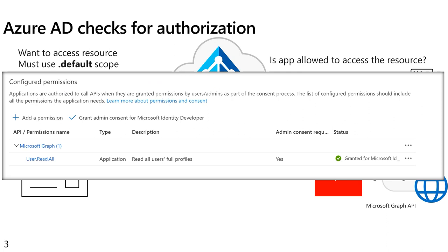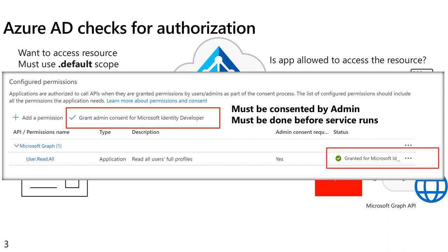And we look to see what permissions are in the application registration. So here, for example, the application has asked for user.read.all as part of its application registration. And we can see that the admin has already granted it for this tenant. In fact, there is a button here in this UI on the app registration page where an admin can make that grant.